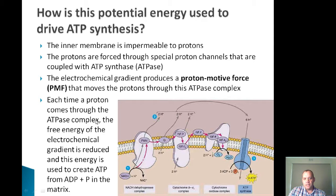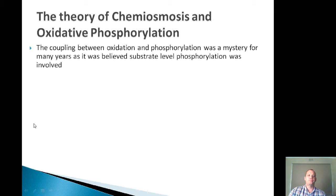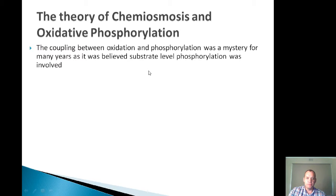This electrochemical gradient produces a so-called proton motive force that moves the protons through the ATPase complex. Each time a proton comes through the ATPase complex, the free energy of the electrochemical gradient is slightly reduced, but that free energy is used to create ATP by phosphorylating ADP and releasing that ATP into the mitochondrial matrix. The coupling between oxidation and phosphorylation was actually a mystery for many years, and it was believed that substrate level phosphorylation was involved.